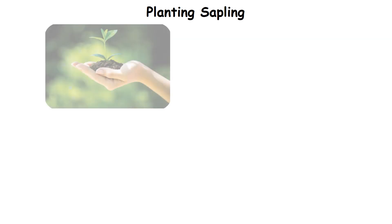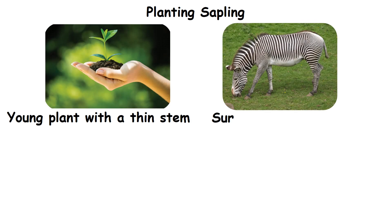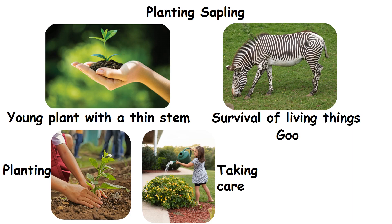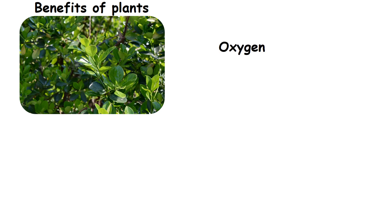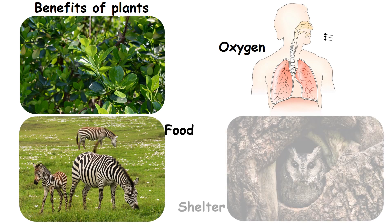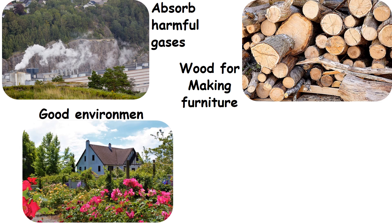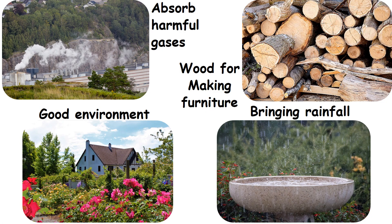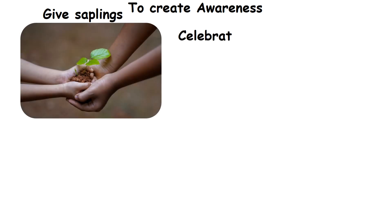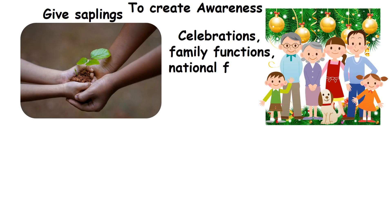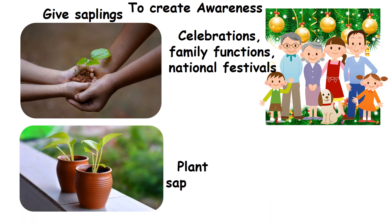A young plant with a thin stem is known as a sapling. Survival of living things is impossible without plants. Planting and taking care of plants leads to a good environment. Benefits of plants include: providing oxygen for breathing, providing food and shelter to living things, absorbing harmful gases and smoke from the surroundings, giving wood for making furniture, offering a good environment to live, and helping bring rainfall. To create awareness, we can give saplings during celebrations, family functions, and national festivals, and also plant saplings on our birthday.